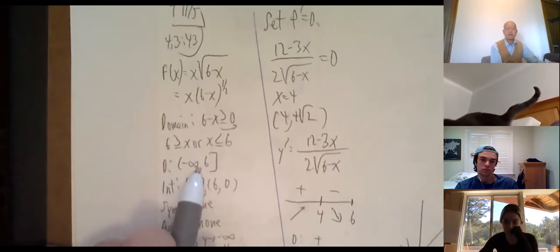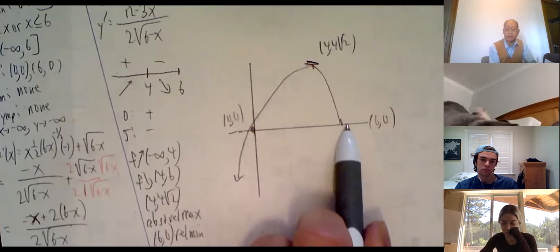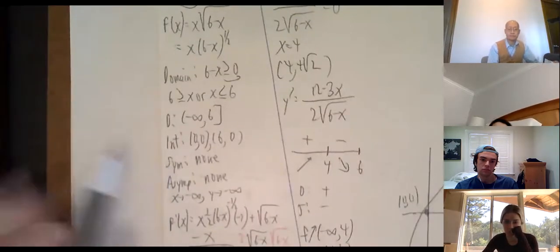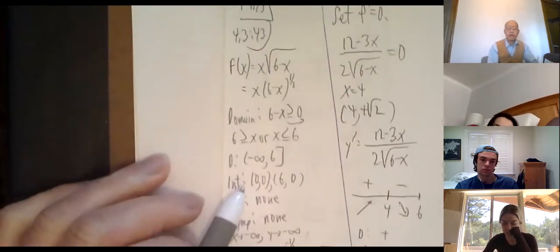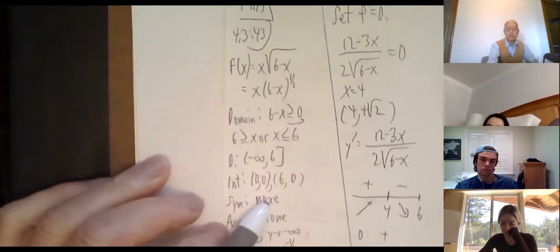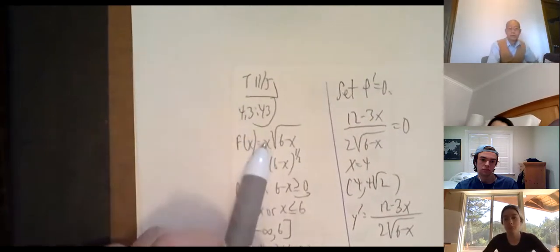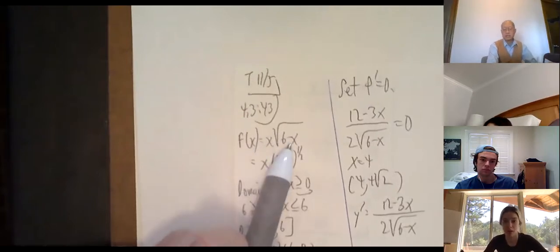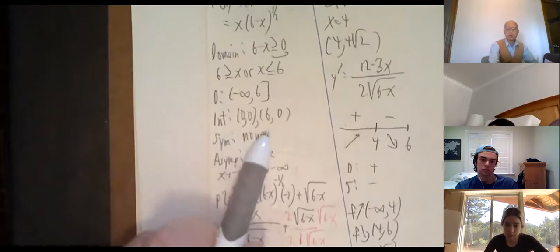Check intercepts: x = 0 gives f(0) = 0, and x = 6 gives f(6) = 0. So intercepts are (0, 0) and (6, 0). There's no symmetry — replacing x with -x doesn't give the same or opposite function. There are no asymptotes; as x → -∞, the function approaches -∞ since x is large negative and √(6-x) is large positive.